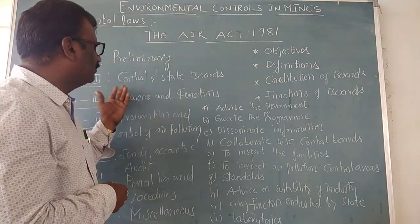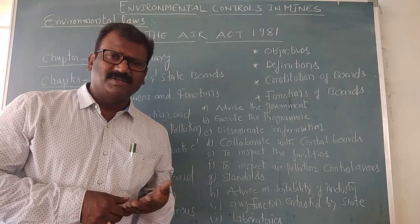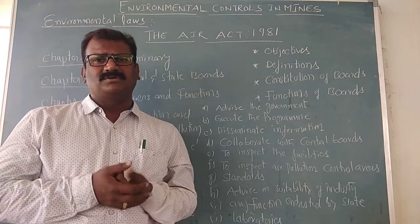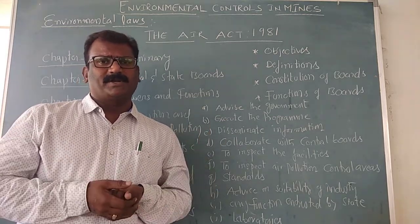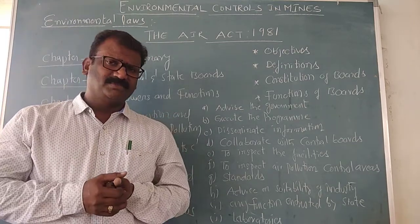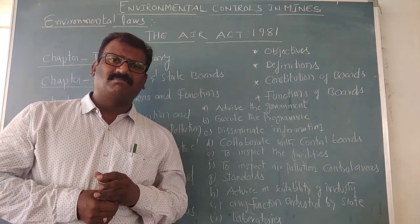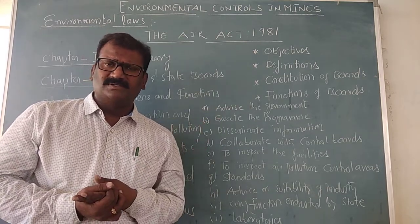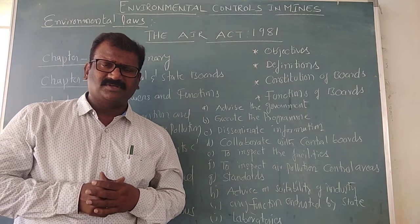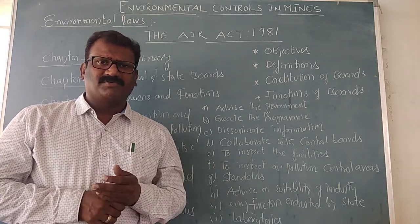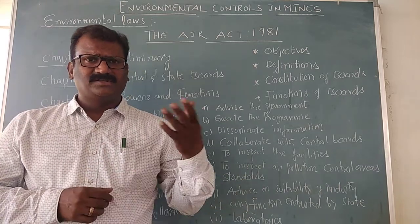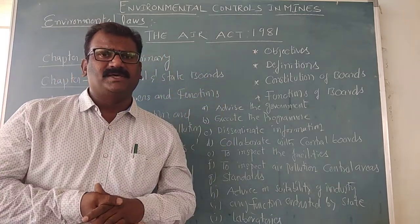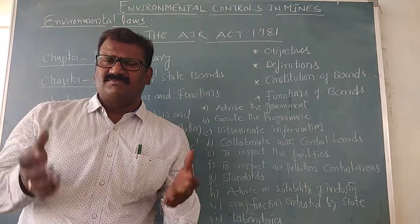The board has a chairman at the state level and also at the central level, each with well-known and sound experience in environmental protection acts and environmental matters. A member secretary with experience in the fishery or forest department is also nominated. These two are the permanent, full-fledged members. Additionally, five members are nominated from the central and state boards respectively, and another three members from various trade bodies, all working together as the board.